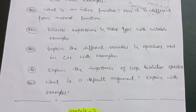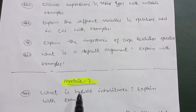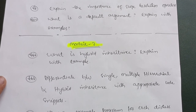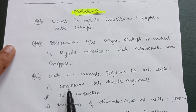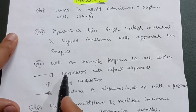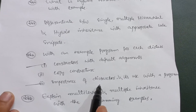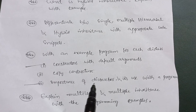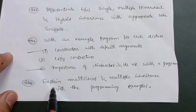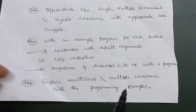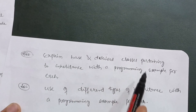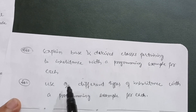For Module 3, focus on inheritance topics: what is hybrid inheritance, explain with example; differentiate between single, multiple, hierarchical, and hybrid inheritance with appropriate code snippets and example programs for each. Also cover constructors with default arguments, copy constructor, and the importance of destructors — these are the most important ones. Questions may combine these, asking for the importance of constructors and destructors with programs. Cover multi-level and multiple inheritance with programming examples, and explain base and derived classes pertaining to inheritance with the use of different types of inheritance.